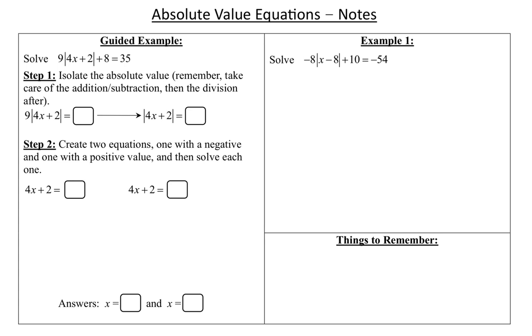So our very first goal with absolute value equations is to get the absolute value by itself. To do that, I'm going to have to get rid of that plus 8 and that times 9. We'll use inverse operations to get this absolute value all by itself. When I say get this absolute value, I'm talking about these bars. These bars tell me that I have an absolute value. We talked about what that means in class, and we'll talk about it more.